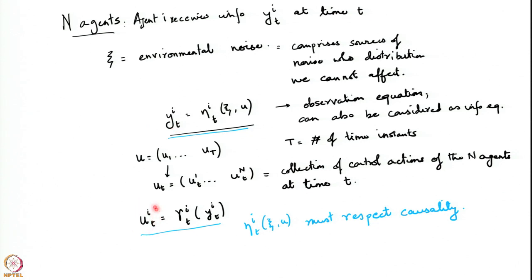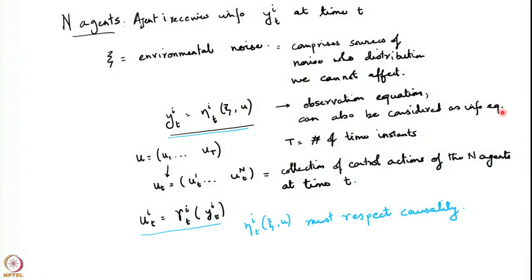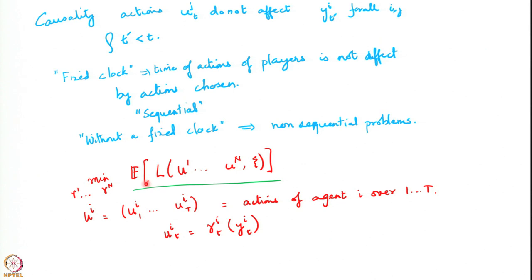The agent i's action u_i^t is chosen as a function of this information. There are two different ways of modeling this: one is to think of it as an observation equation, in which case the information has to be carefully described by specifying exactly what part of the observations are available at any given point in time; or one can club all those observations together and write them as a single information equation. The cost of the problem is also written without any reference to a state — it is a function of only the actions that agents take and the environmental noise.